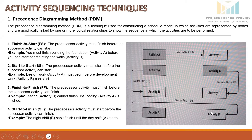The last relationship is Start to Finish, SF. This type of relationship is rarely used. The predecessor activity must start before the successor activity can finish. For example, the night shift B cannot finish until the day shift A starts. This relationship is a bit confusing — it flips the usual flow we see in other relationships. Activity A is still considered the predecessor even though it starts after activity B.